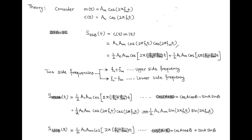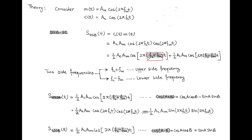Using the product-to-sum identity for two cosines, we expand this expression and obtain two terms: (1/2)·A_C·A_M·cos(2π(f_C + f_M)t) plus (1/2)·A_C·A_M·cos(2π(f_C − f_M)t). So here we have two side frequencies. The first term contains the upper side frequency, f_C + f_M, and the second term contains the lower side frequency, f_C − f_M. After suppressing one of the side frequencies, we get single sideband.